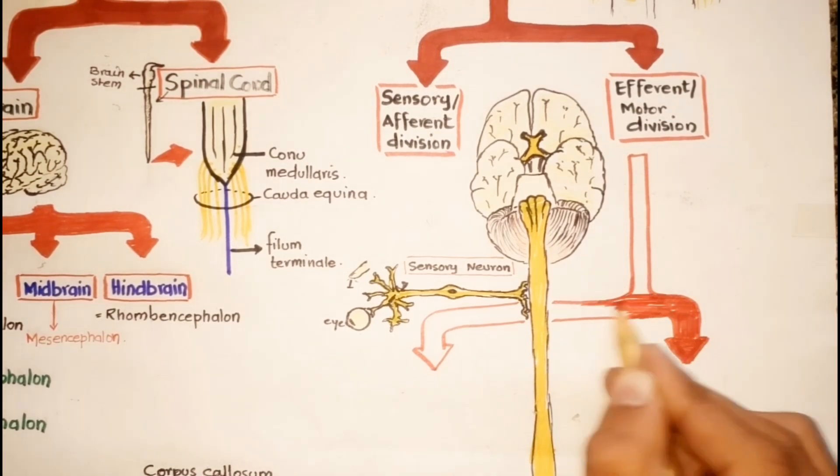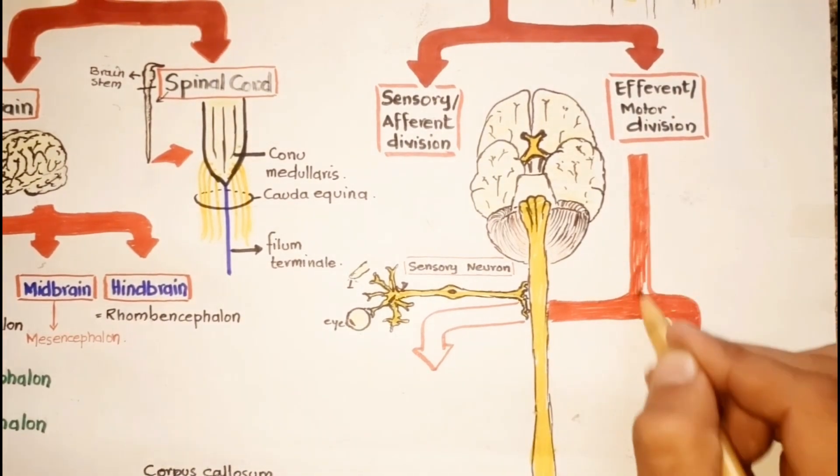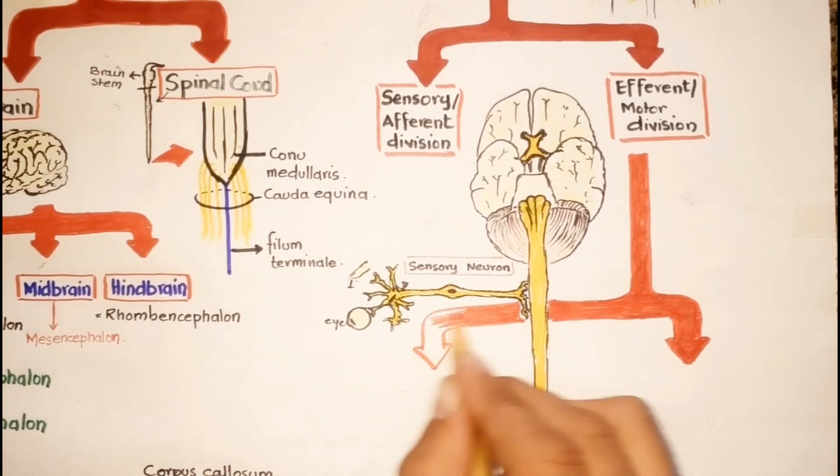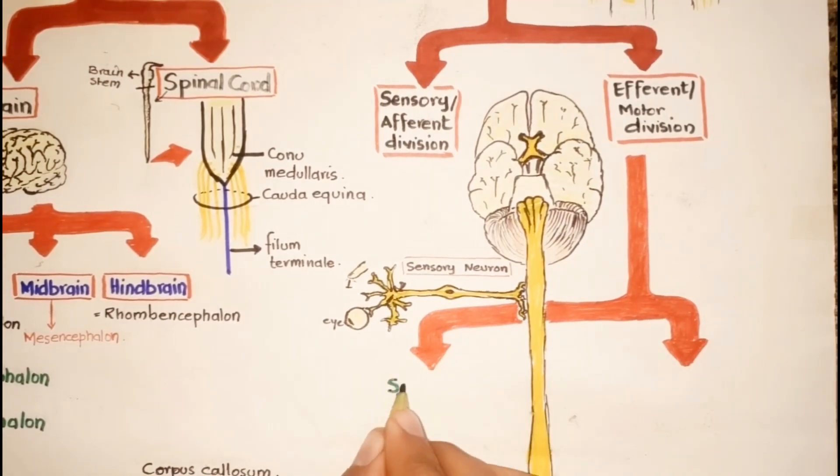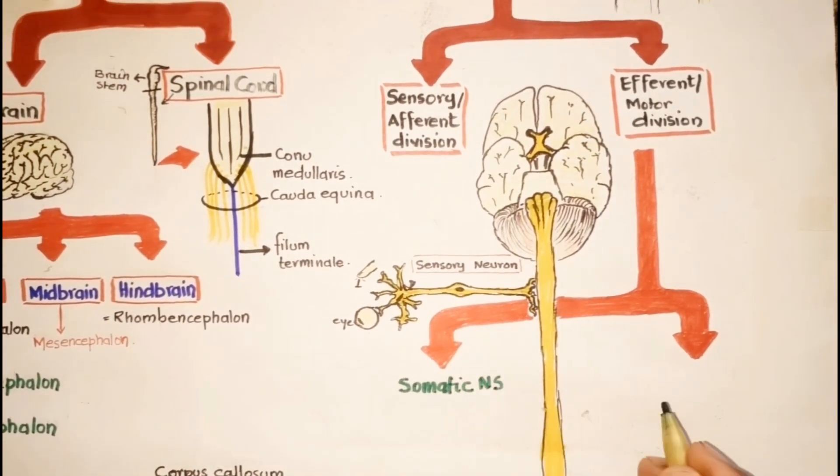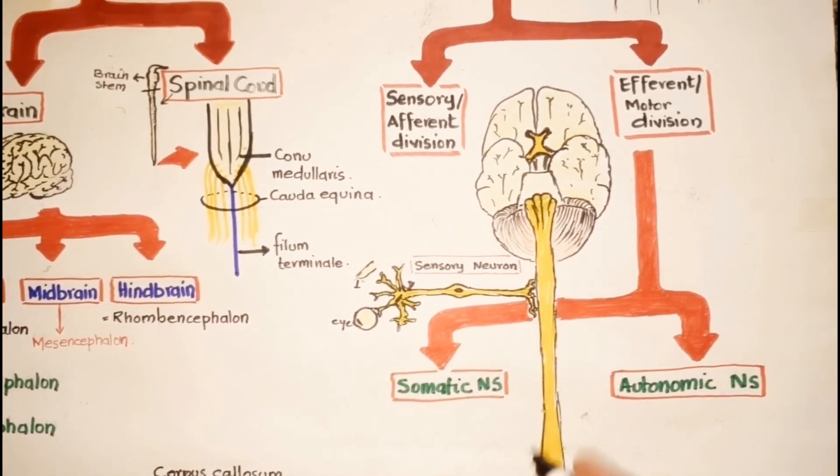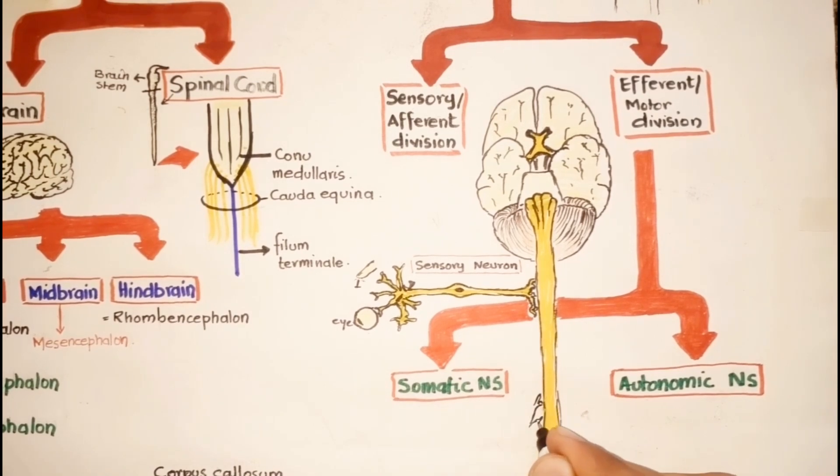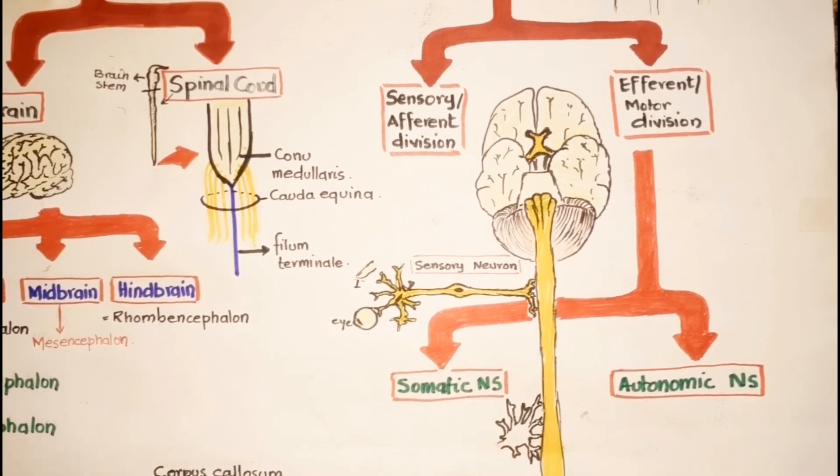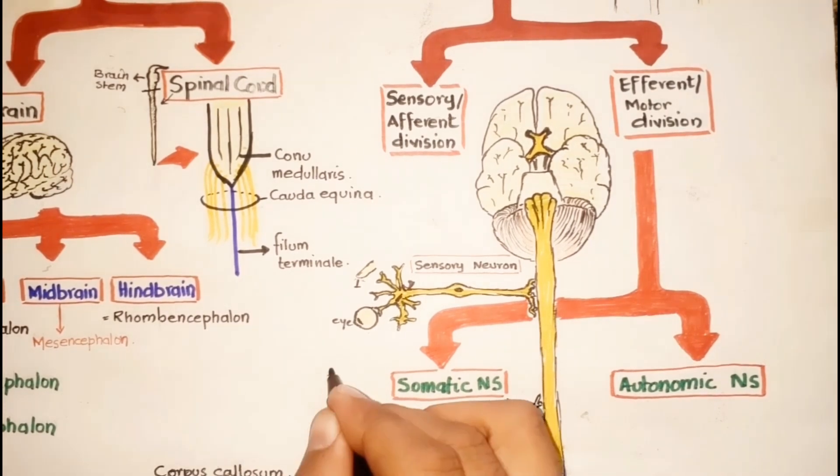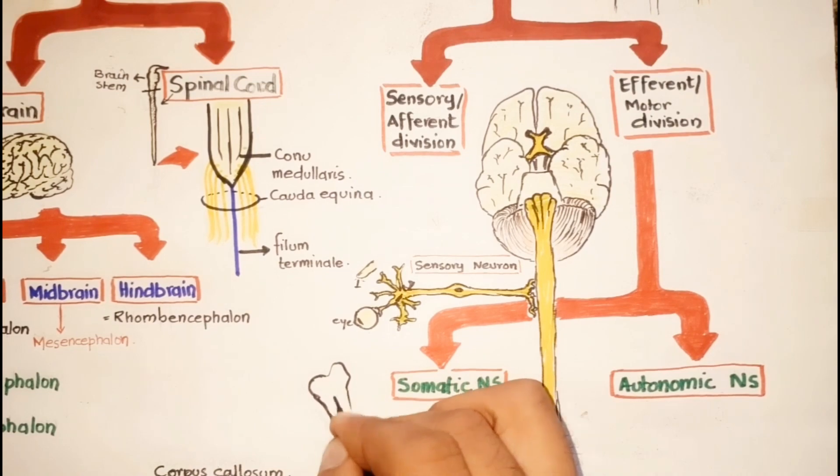The somatic nervous system is composed of those efferent neurons that innervate the skeletal muscles of our body, and thus it is involved in the control of voluntary functions.